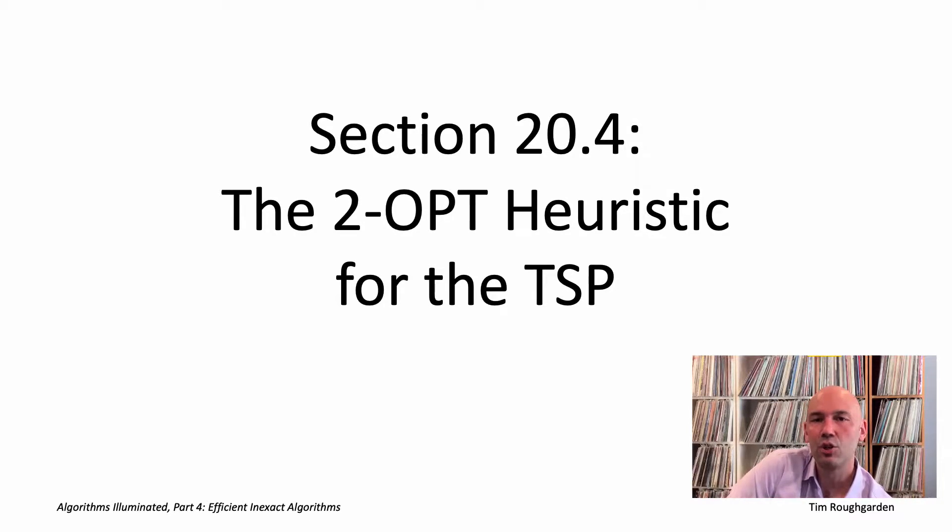Welcome to this video that accompanies section 20.4 of the book Algorithms Illuminated, part 4. It's a section about the two-opt heuristic for the TSP.